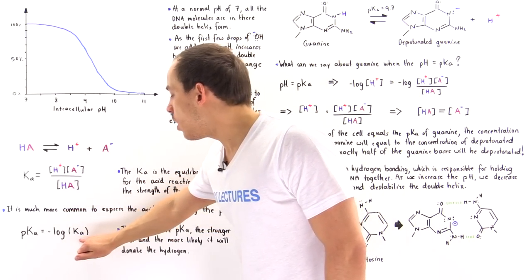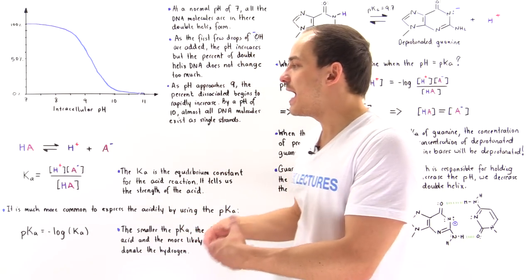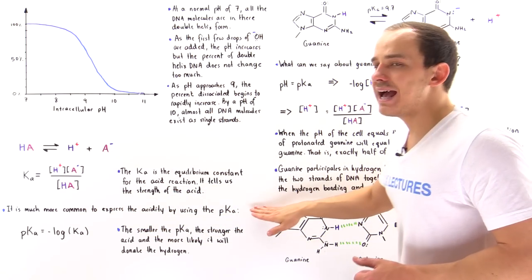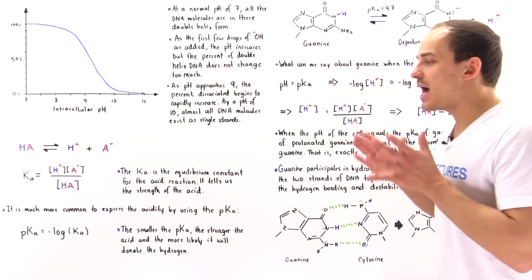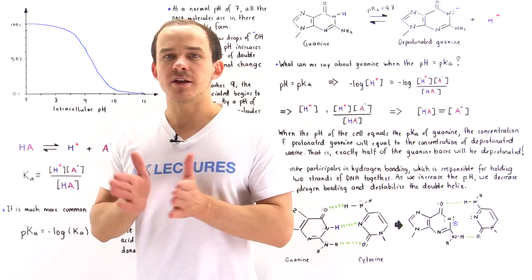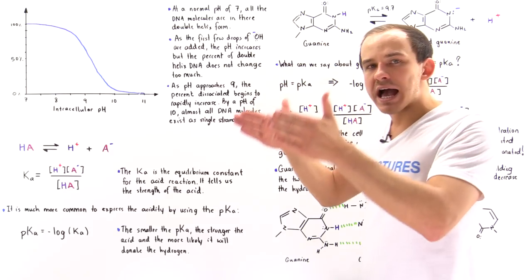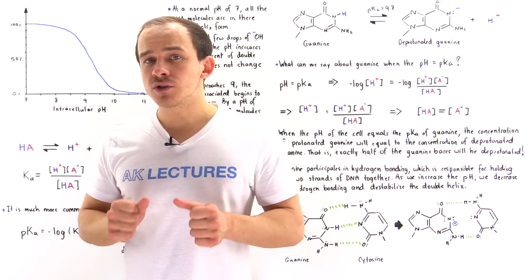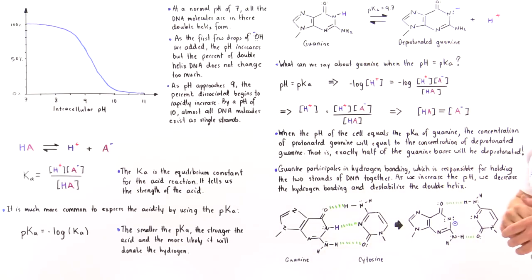A smaller pKa means the acid is strong and will very likely donate that H⁺ ion. That is what we mean by pKa — it basically describes the strength of that acid. Now, what are the acids that exist within our DNA? If we examine the bases within our double helix structure, some of the bases can act as acids. Let's take a look at guanine as an example.